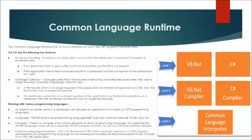Working with various programming languages: a developer can develop an application in a variety of .NET programming languages. The first level is the programming language itself — the most common ones are VB.NET and C#. There is a compiler which will be separate for each programming language, so underlying the VB.NET language there will be a separate VB.NET compiler, and similarly for C# you will have another compiler. The Common Language Interpreter is the final layer in .NET, which would be used to run a .NET program developed in any programming language. The compiler will send the program to the CLI layer to run the .NET application.